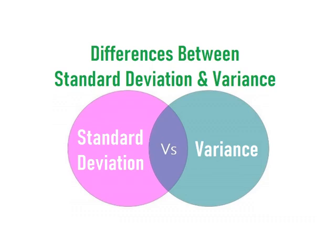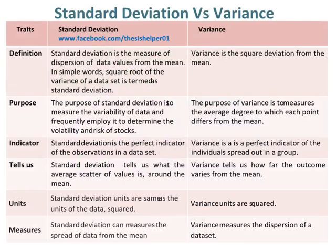Differences between Standard Deviation and Variance. Standard deviation is the measure of dispersion of data values from the mean. In simple words, the square root of the variance of a data set is termed as standard deviation.